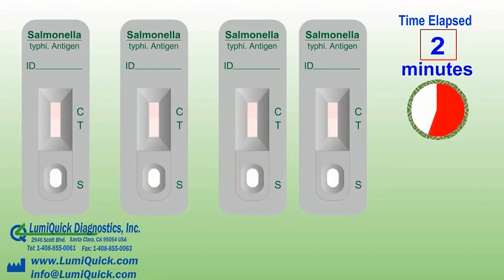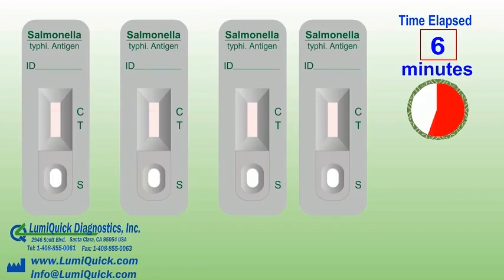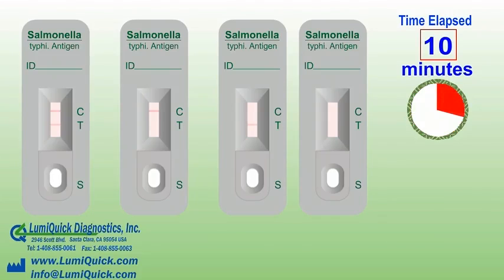Typhoid fever is a life-threatening illness caused by the bacterium Salmonella Typhi, first observed in the mesenteric nodes and spleen of fatal cases. The infection is typically acquired by ingestion. On reaching the gut, the bacilli attach to the epithelial cells of the intestinal villi and penetrate to the lamina propria and submucosa, where they are phagocytosed by polymorphs and macrophages.